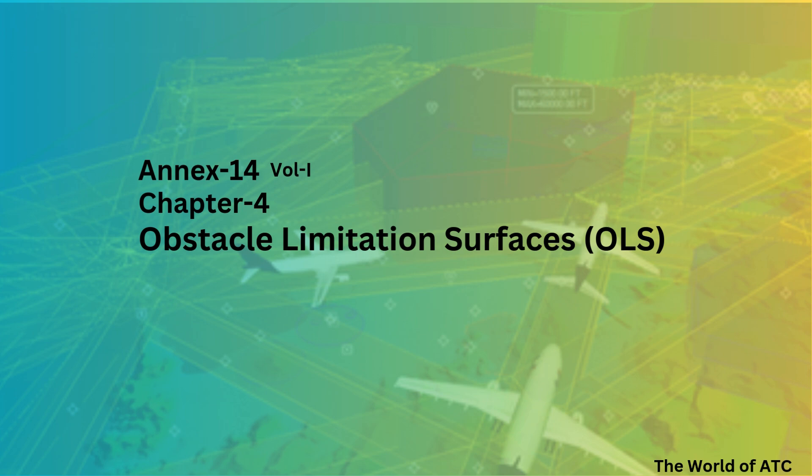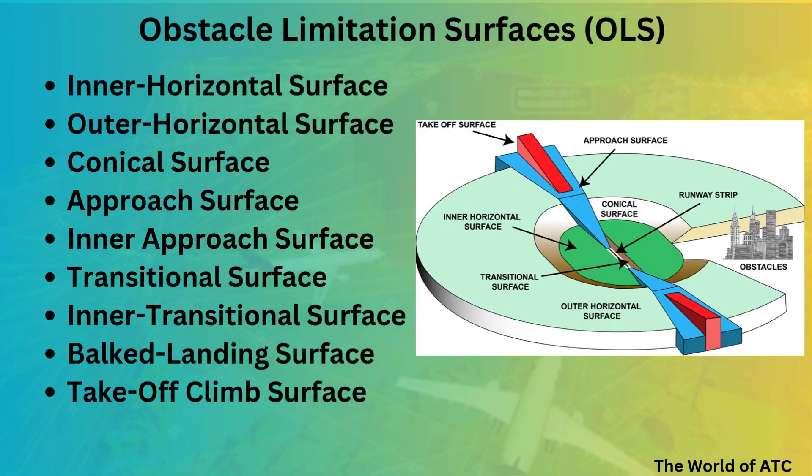Hello everybody. Today we are back with our topic of obstacle limitation surfaces from Chapter 4 of Annex 14 Volume 1. Previously, we have already learned that there are nine obstacle limitation surfaces around any aerodrome. Out of those, inner horizontal surface has already been explained.